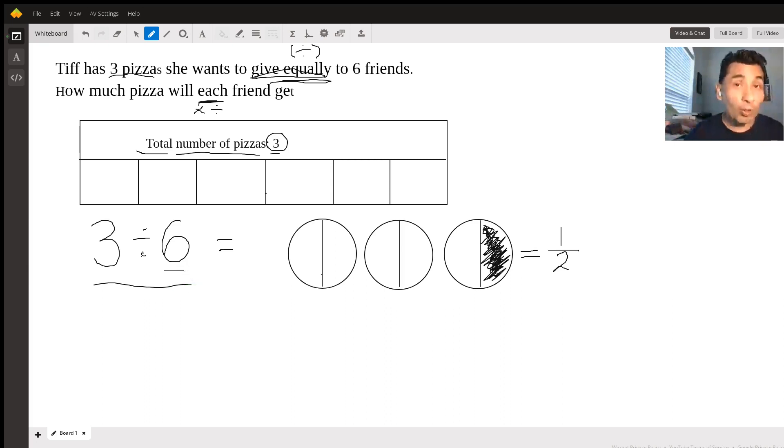Now I told you we're going to use another way. This way is by using models, and I love to use models because it's something really visual. We have 3 pizzas: 1, 2, 3. We know that we want to share equally between 6 friends. That means that in total we want to have 6 equal parts. We can divide each pizza in half, like this: half here, half here, and half here.